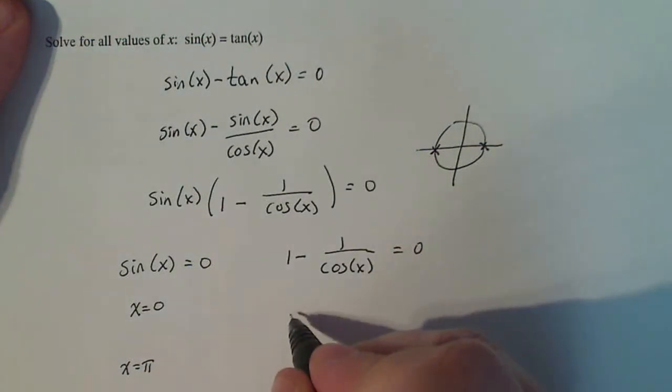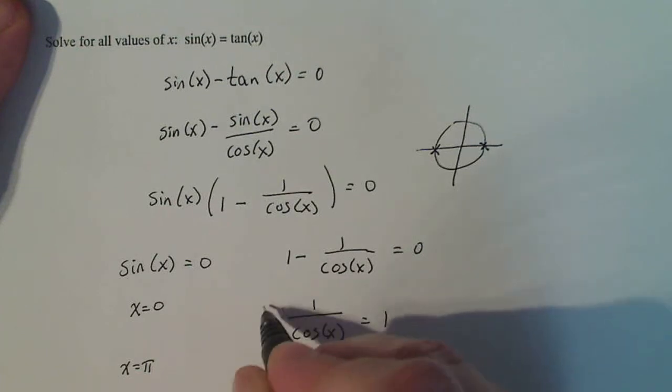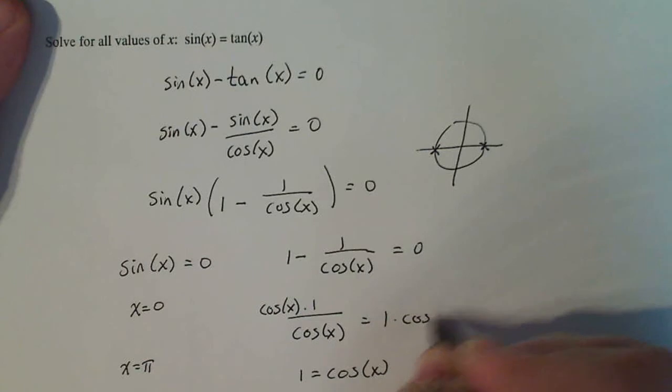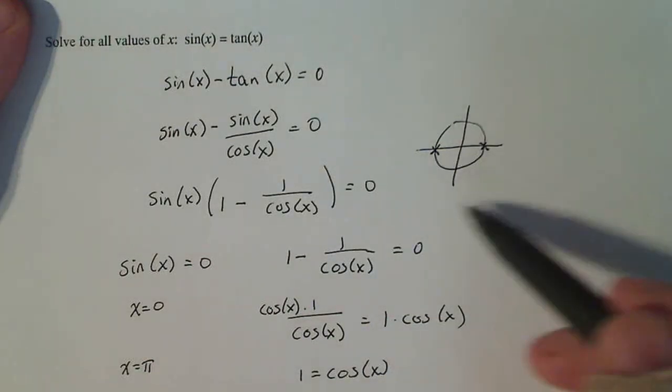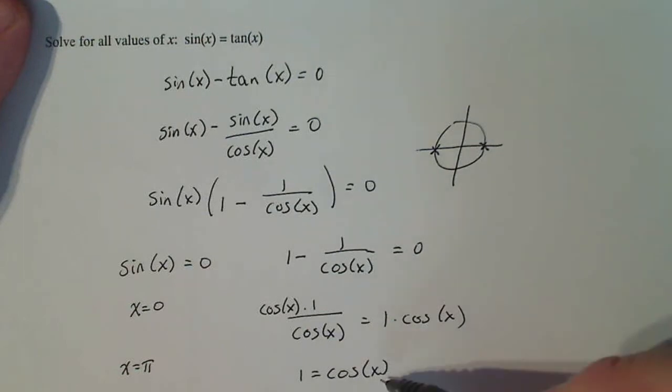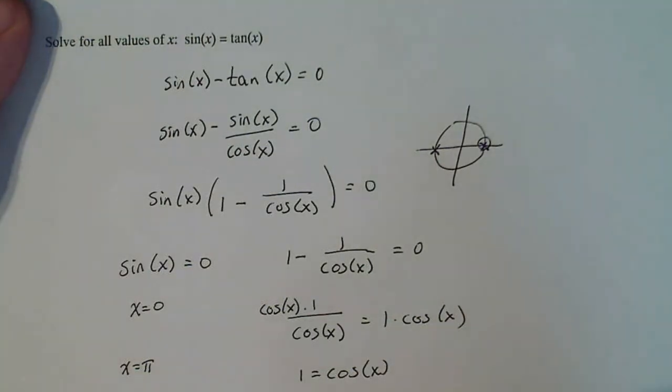Now I'm going to continue solving this. One over cosine x equals one. Then one equals cosine x after multiplying both sides by cosine x. Now I have to think about on this rotation, where does cosine x equal one? Well, the only place that cosine x equals one is right here, where x equals zero.